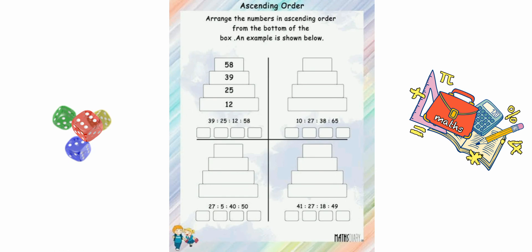यह activity parameter आपके सामने है, इसके अंदर एक example solve किया गया है जिसमें 56, 39, 25, and then followed by the smallest 12 — आपका descending order हो गया।